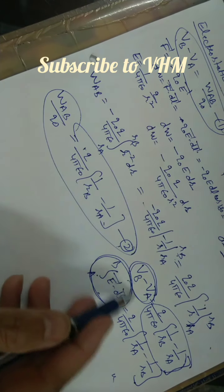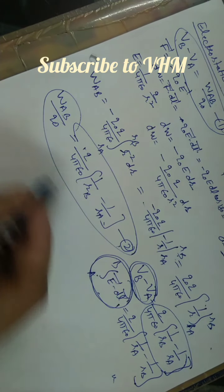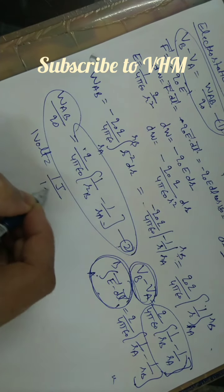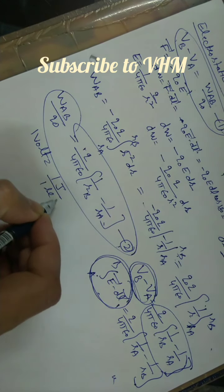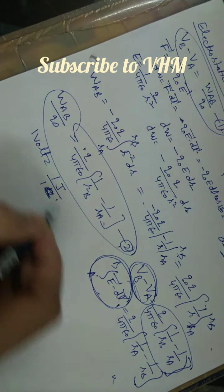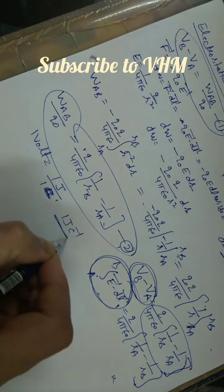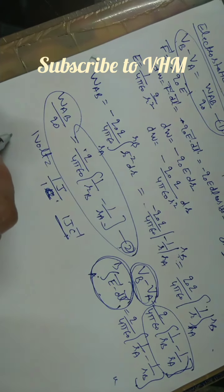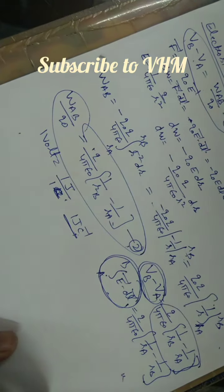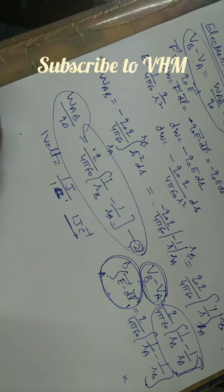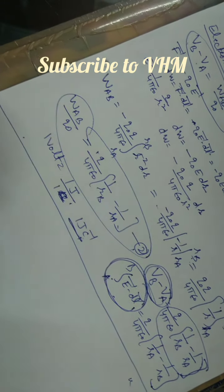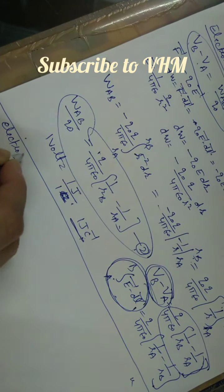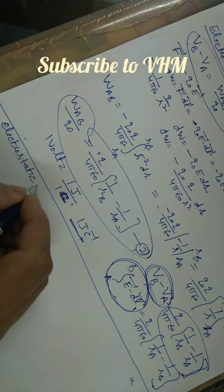In the SI system, this potential difference is measured in volts, where 1 volt equals 1 joule per coulomb — that is, 1 joule per coulomb is the potential difference of 1 volt. From here we can also find the expression for electrostatic potential.